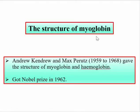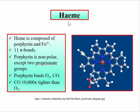Kendrew and Max Perutz worked on the structure of myoglobin and hemoglobin from 1959 to 1968, and they were ultimately awarded the Nobel Prize in 1962 for elucidating the structures of these metalloproteins. Myoglobin is a heme protein, so we need to discuss the heme part and the globin part.